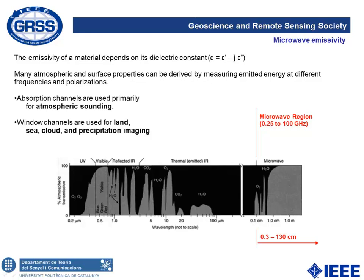In this figure, atmospheric transmission in percentage is shown. In the microwave region, specific channels marked with O2 and H2O are absorption channels which absorb oxygen or water vapor. But on the right side, around 10 to 20 centimeters wavelength, there is a window where the atmosphere is transparent. This means that all sensors in these bands can see through clouds, and that is the very good thing about microwave radiometers. These window channels are used for land, sea, cloud and precipitation imaging.